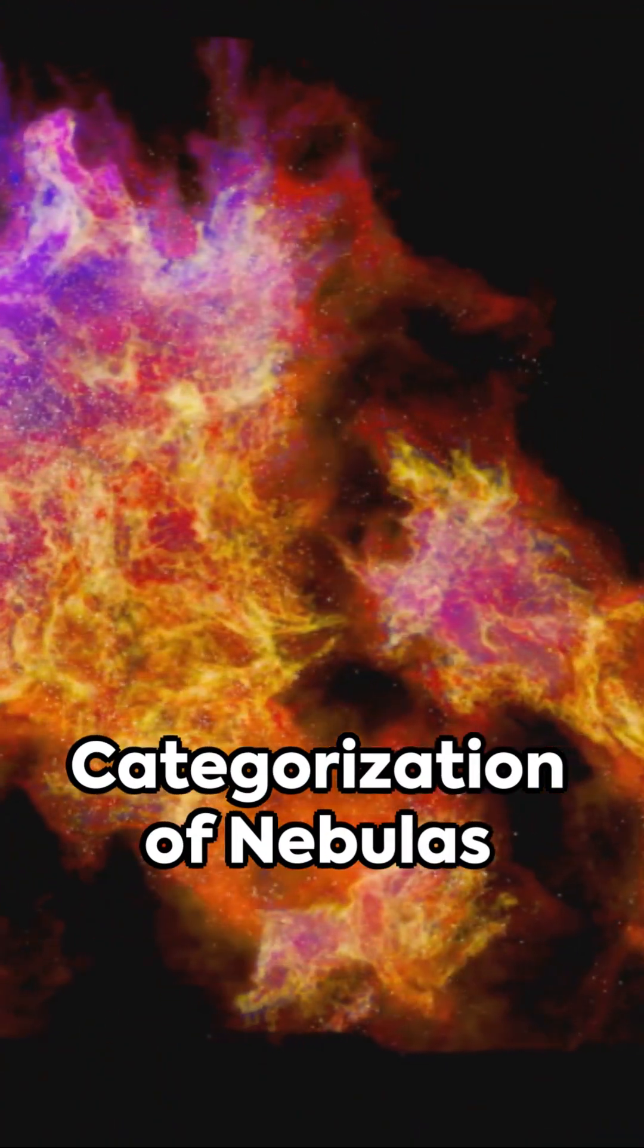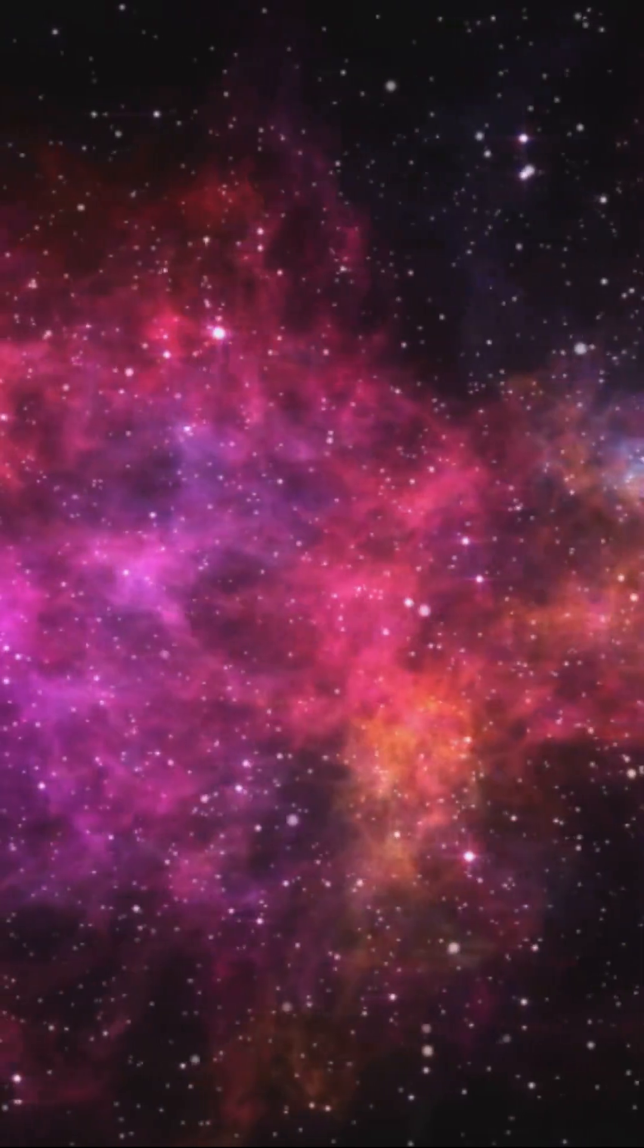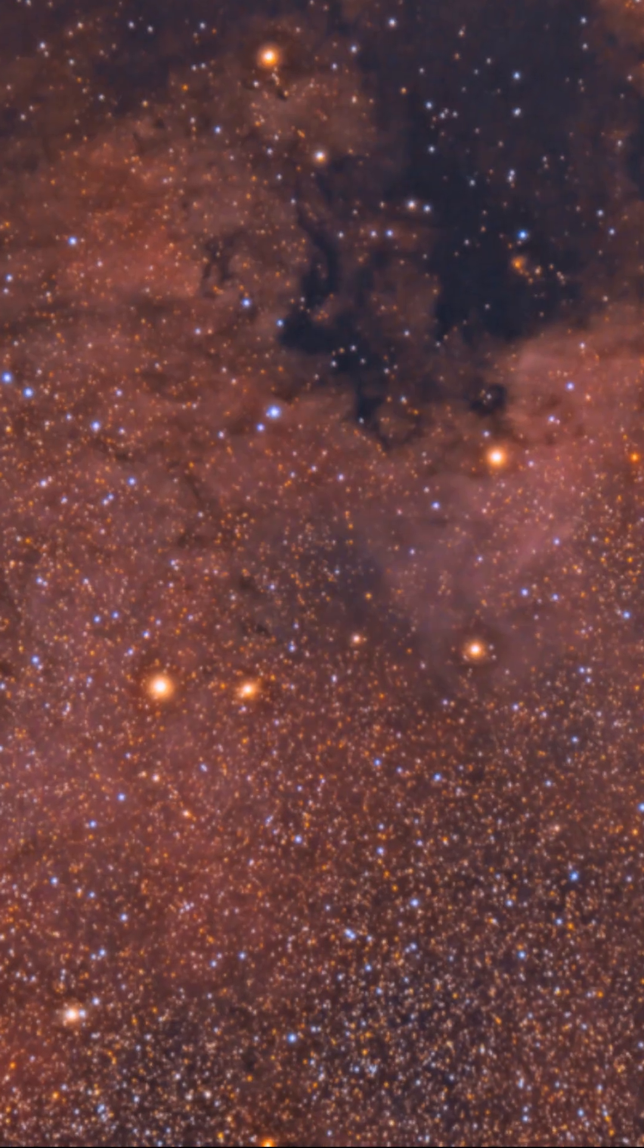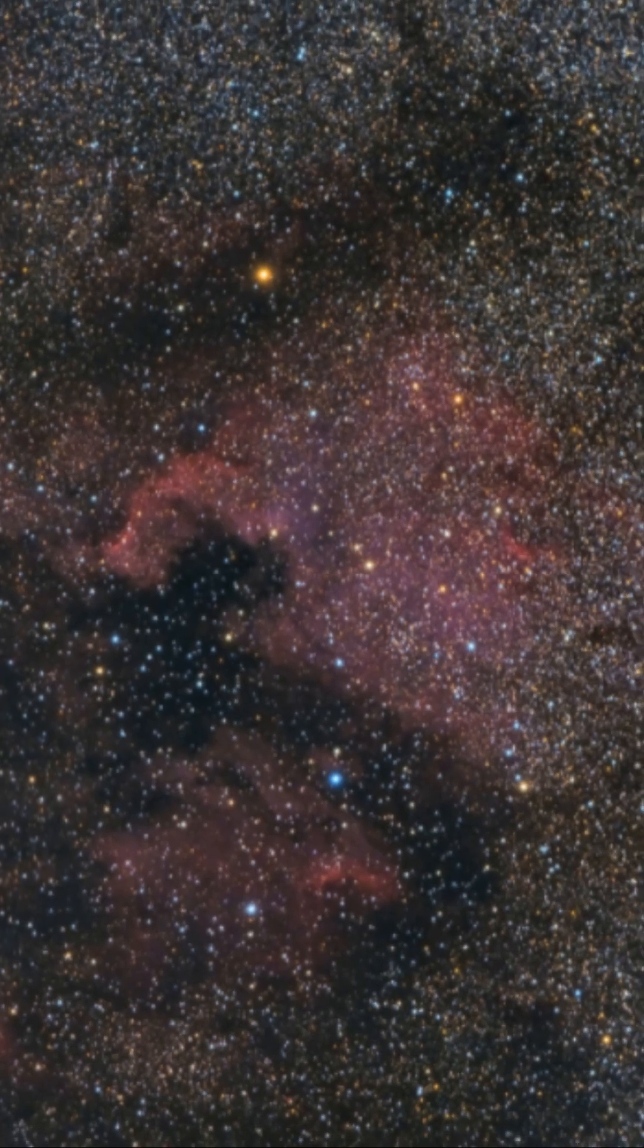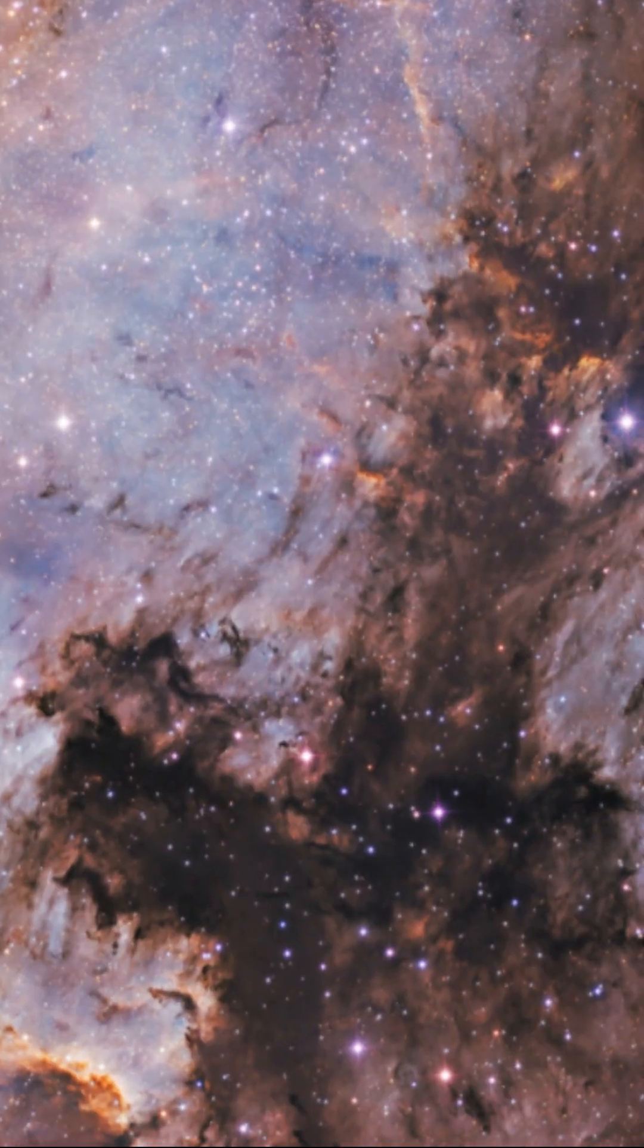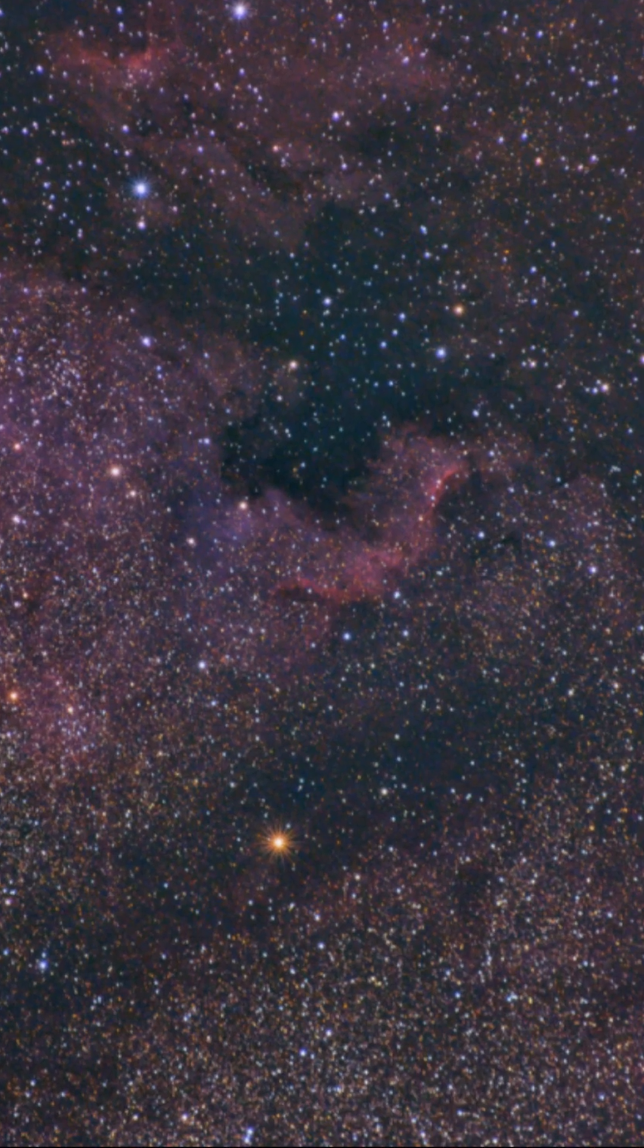Nebulas can be categorized based on their emission spectra, such as H2 regions and HA regions. The North American Nebula resembles the shape of the North American continent and is located in the constellation Cygnus.